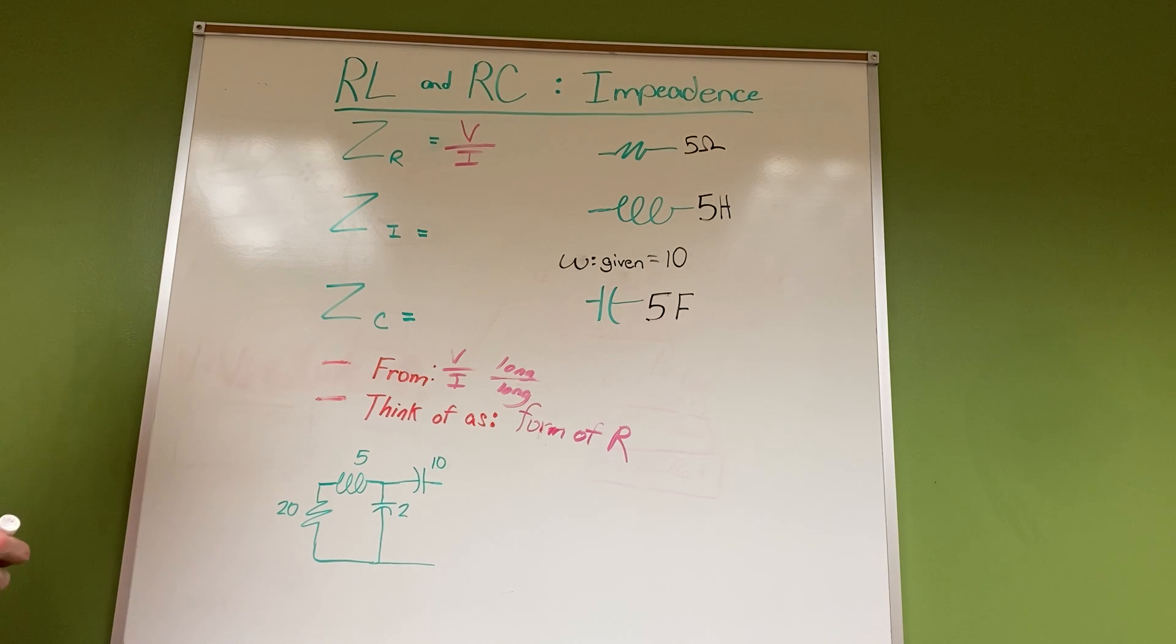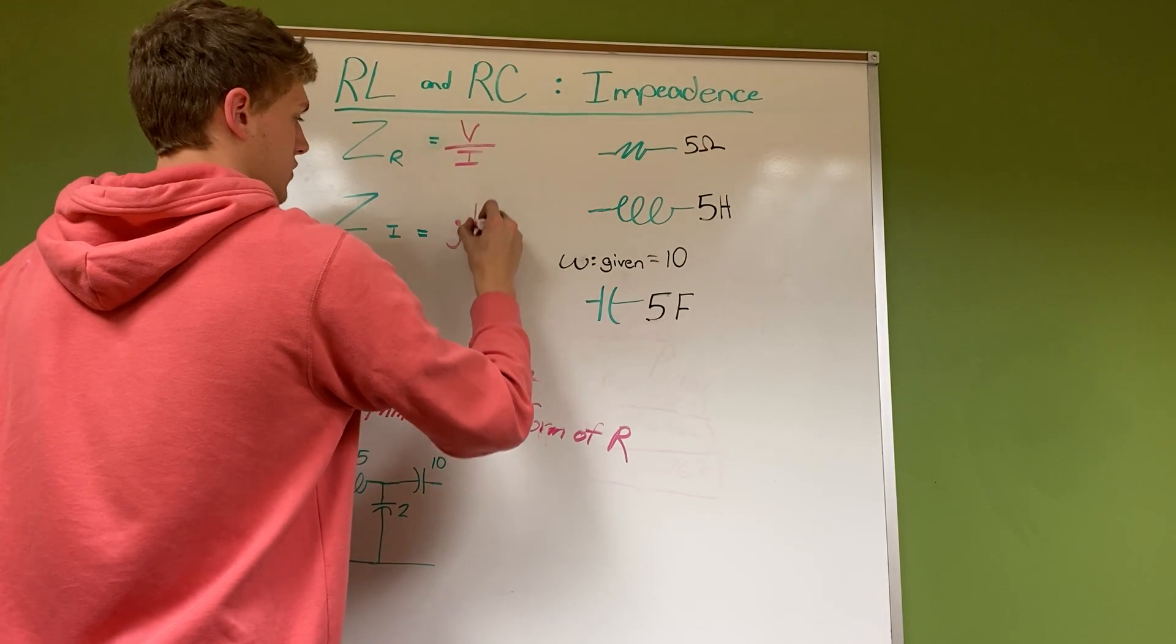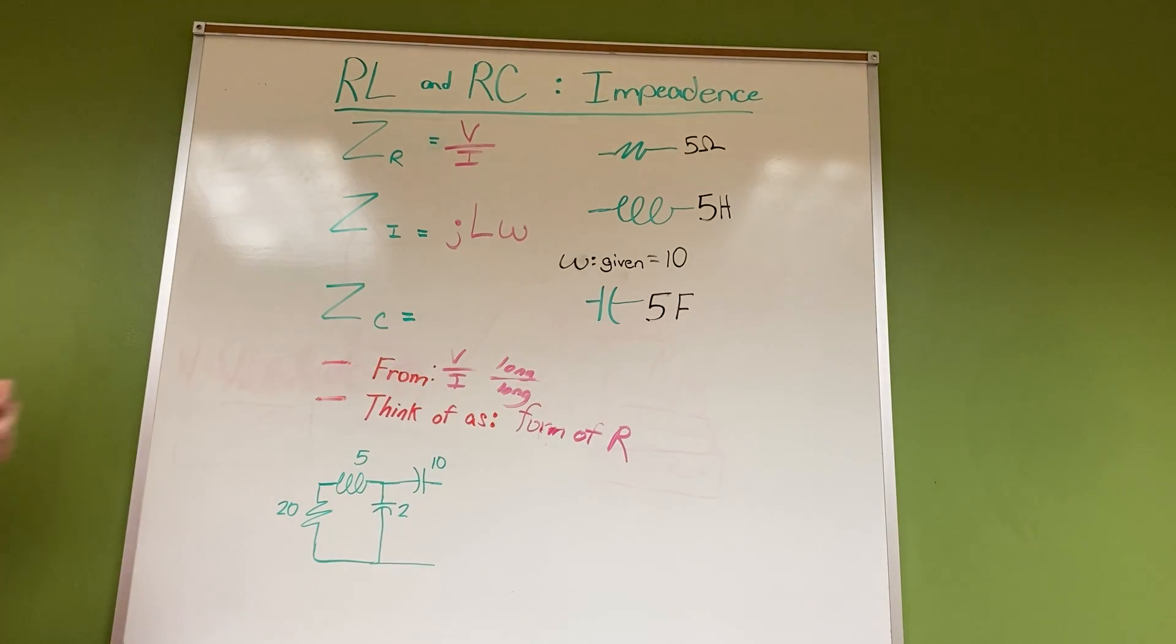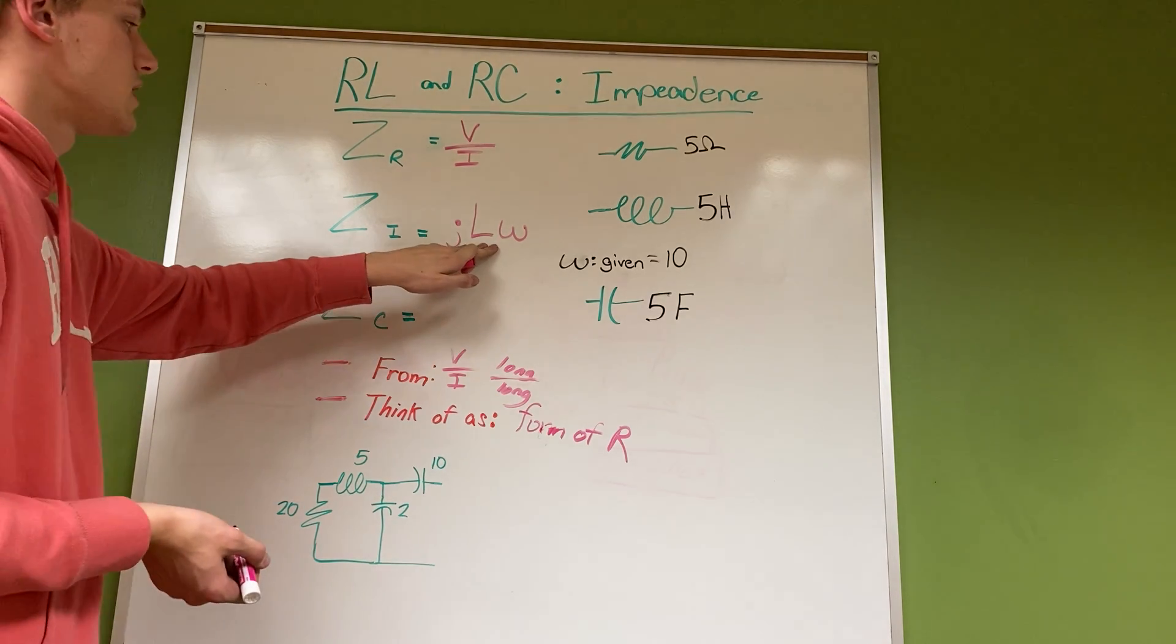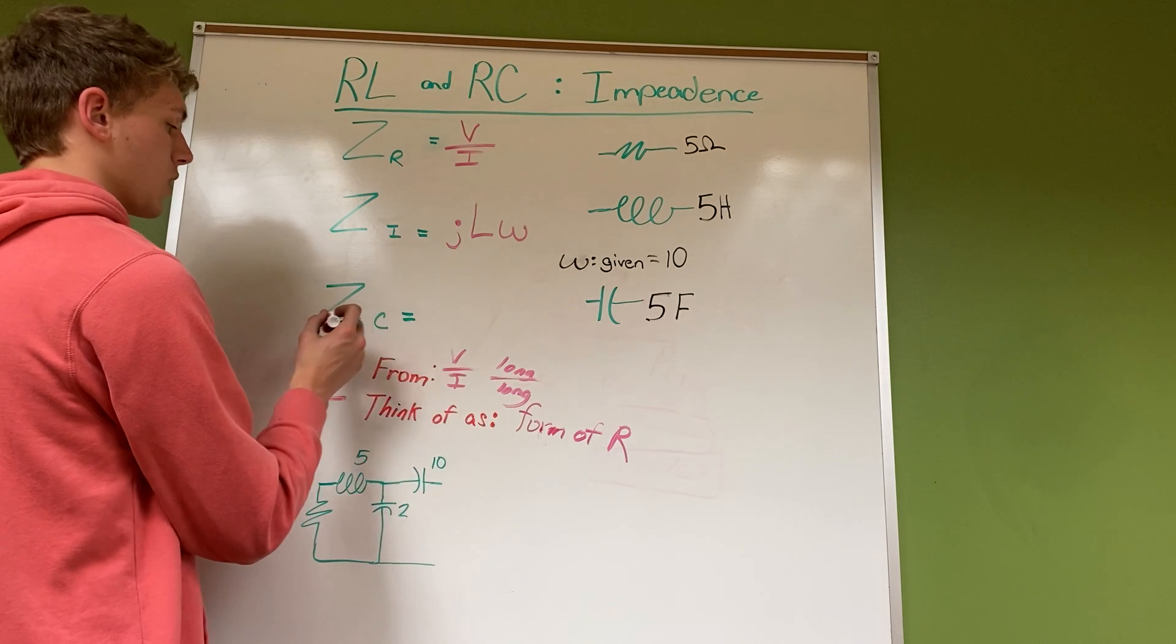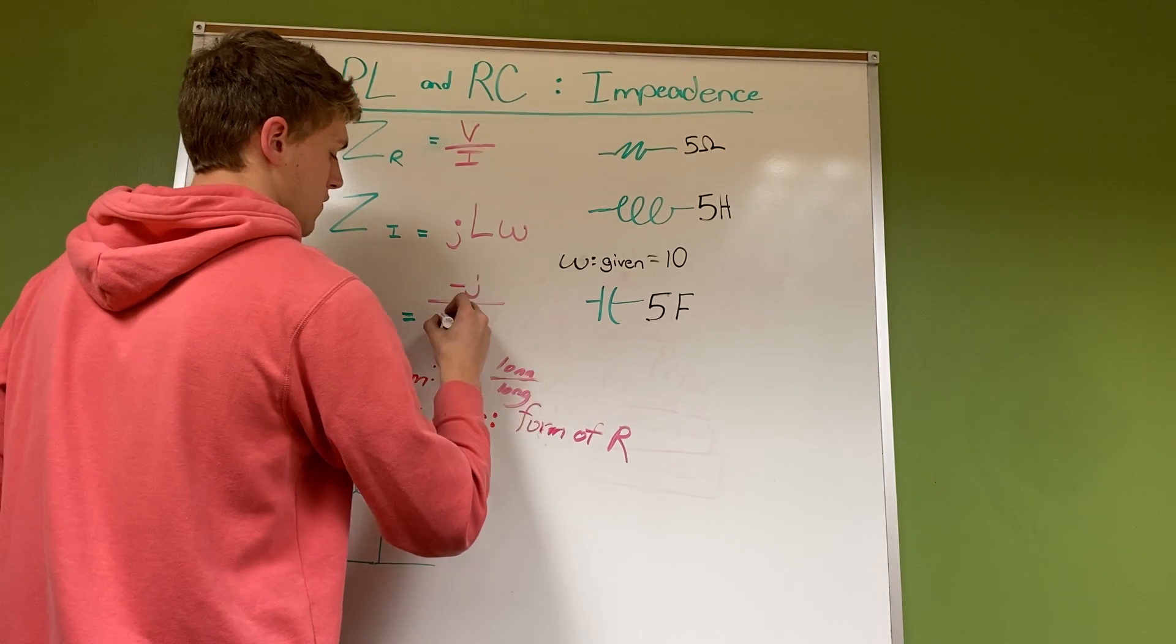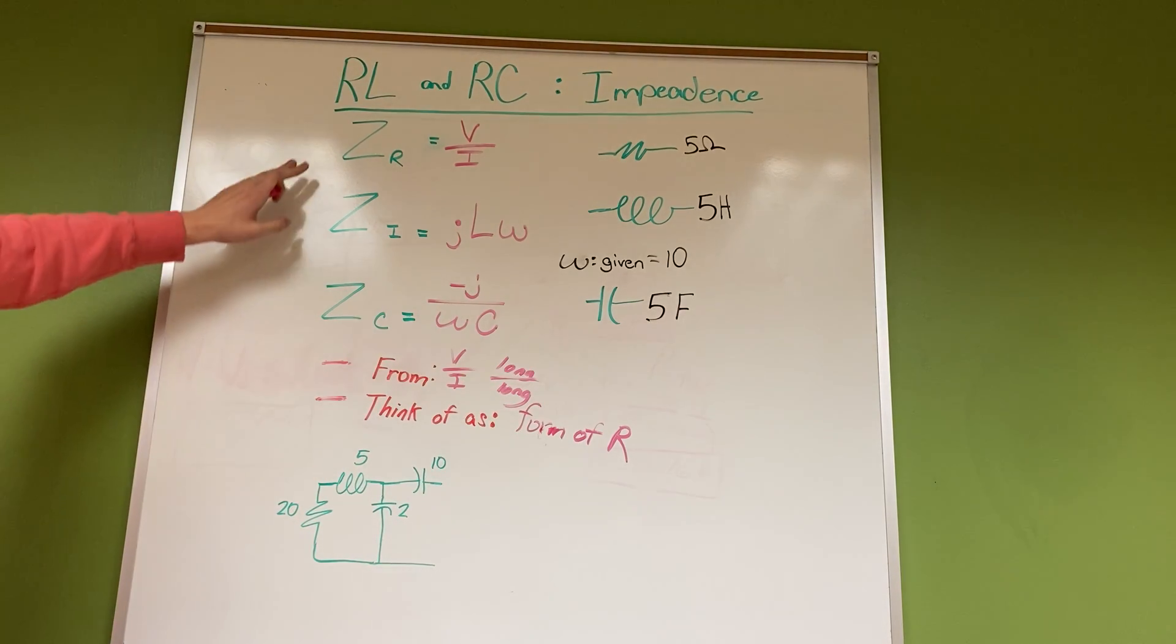These are the three equations that we need to know for circuits. First, for inductors, we have jLω - that is the imaginary j, then the inductance times omega. For capacitors, it's negative j over omega times capacitance.